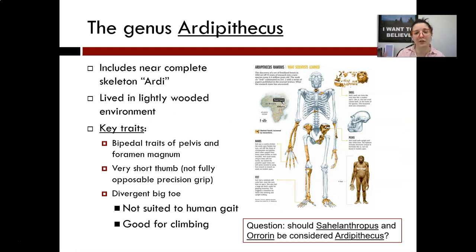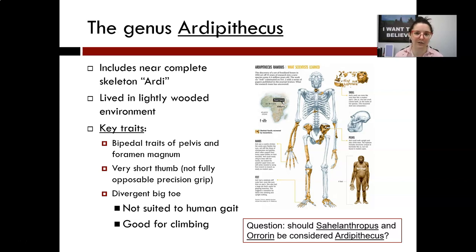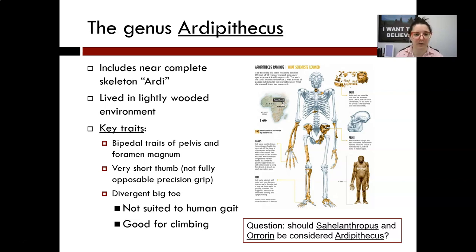When we get to the genus Ardipithecus, we have pretty conclusive evidence of bipedalism. We have a couple of sites with members of this genus represented, including the near-complete skeleton 'Ardi,' which was declared Time Magazine's scientific find of the year. We also have great evidence for environmental reconstruction showing that Ardi was living in an arboreal environment — a wooded environment, but more lightly wooded, not dense forest cover.